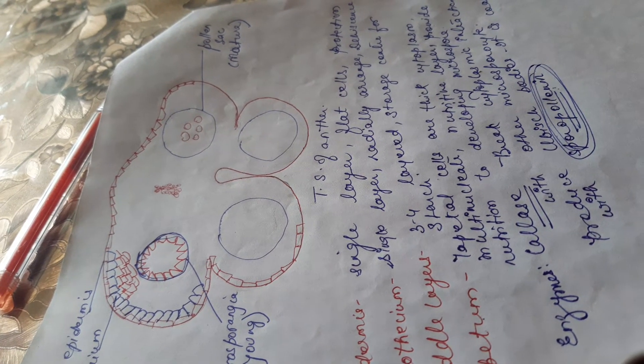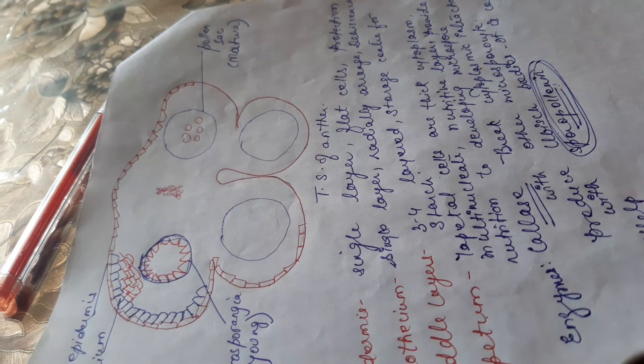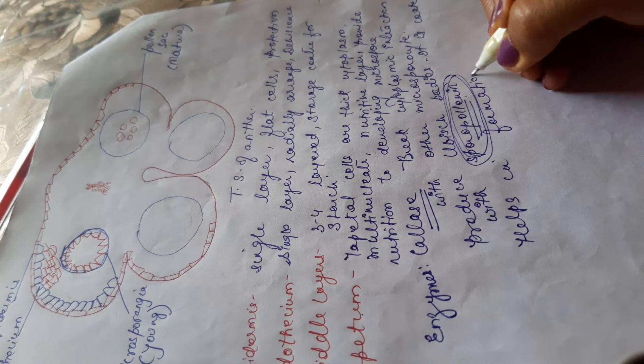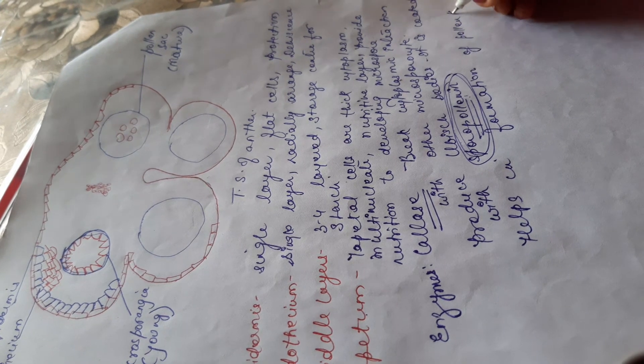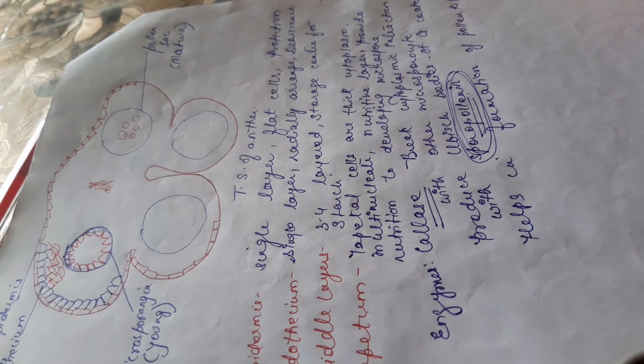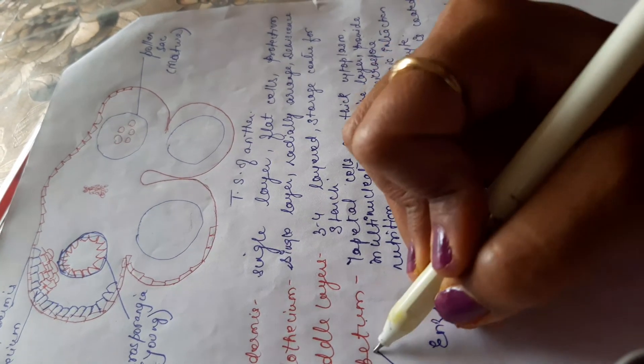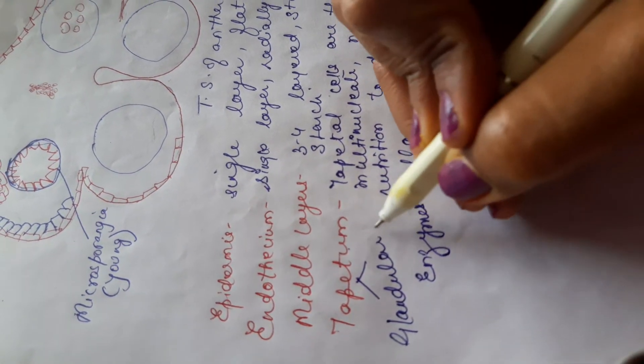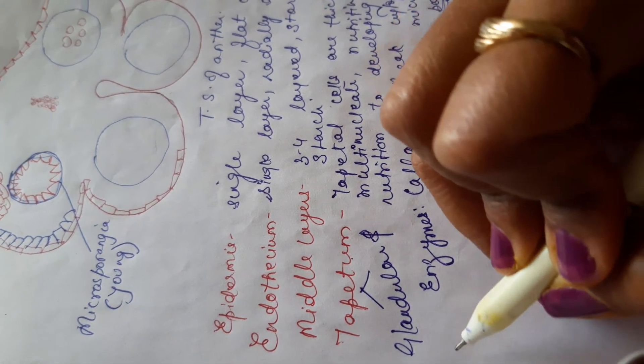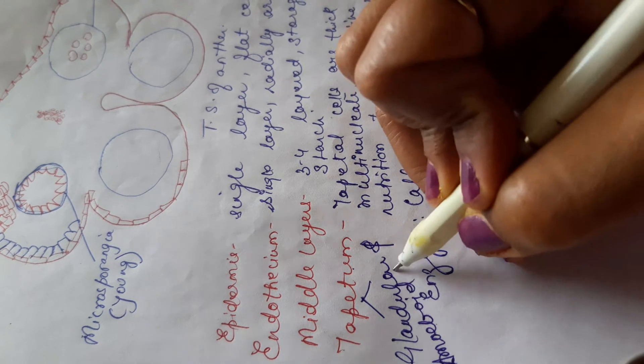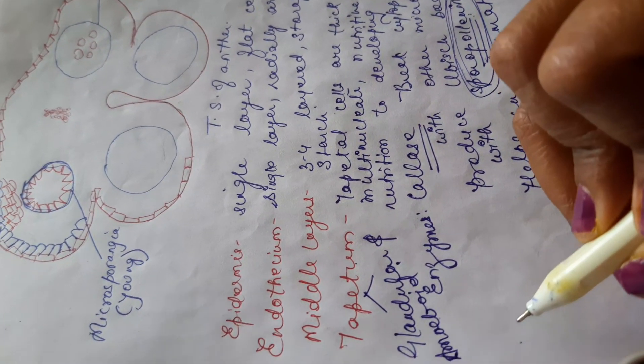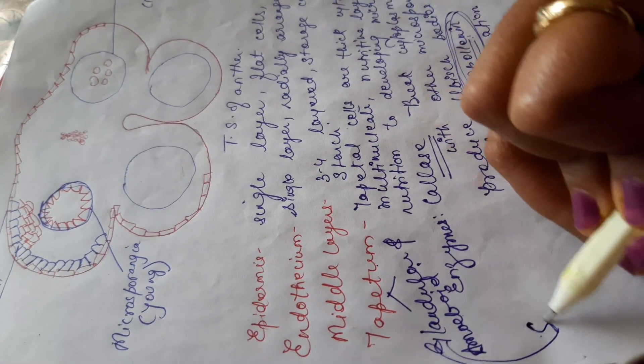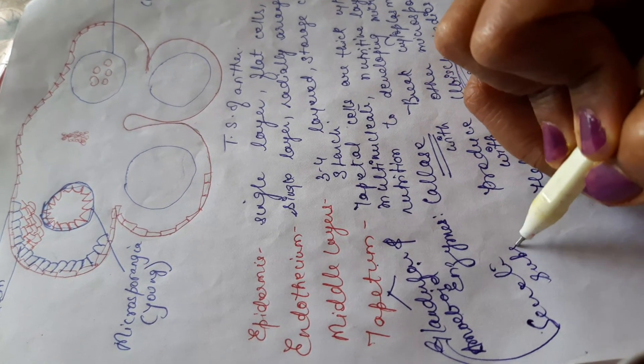It helps in formation of pollen kit. And tapetum is of two types: glandular and amoeboid. Glandular is also known as secretory tapetum.